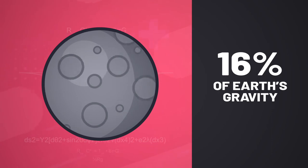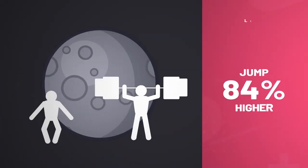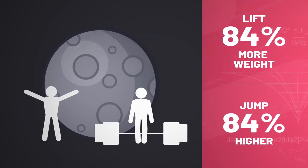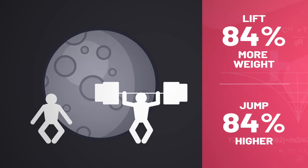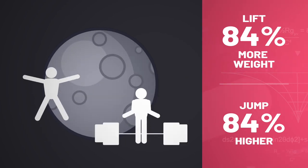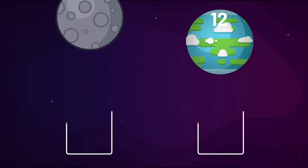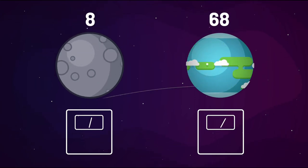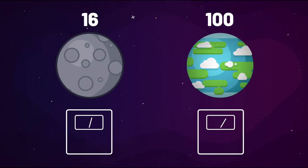In other words, you'd be able to jump around 84% higher and lift about 84% more weight on the Moon. And you would weigh far less, too. A 100-pound person on Earth would only weigh 16 pounds on the Moon.